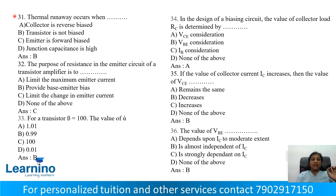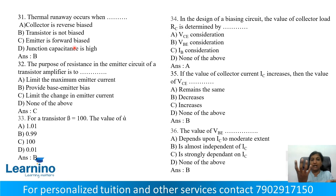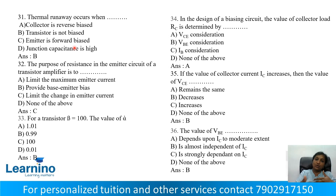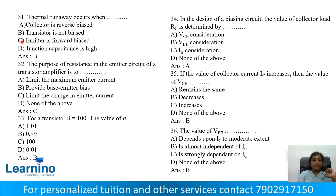Question number 31: Thermal runaway — the collector current increases as temperature increases, causing further increase in current until the transistor is destroyed. Thermal runaway occurs when — Option A: Collector is reverse biased, Option B: Transistor is not biased, Option C: Emitter is forward biased, Option D: Junction capacitance is high. Correct answer is Option B.